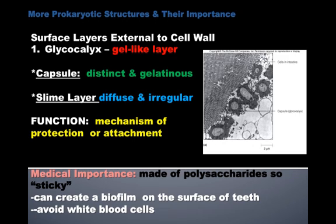The glycocalyx is a gel-like layer made out of sugars, and it can be found in two different versions. One is called the capsule — it is very distinct and gelatinous. If it's called a slime layer on the outside, that makes it diffuse and really irregular shaped.